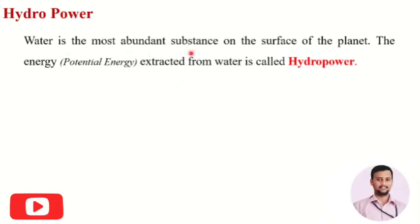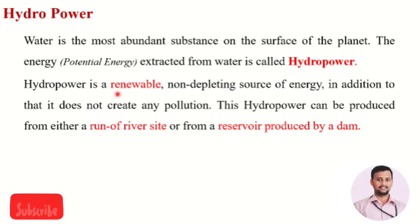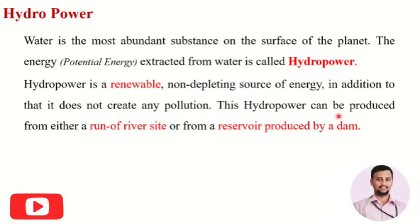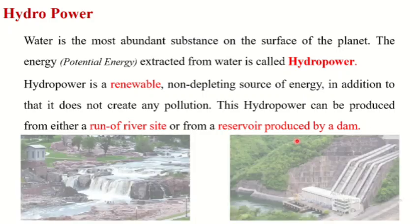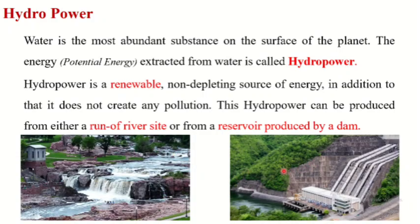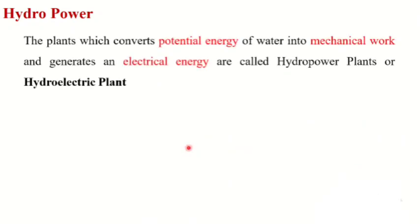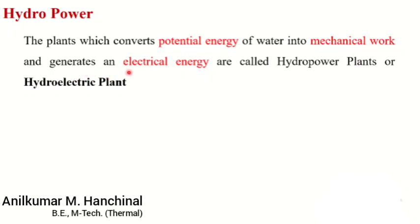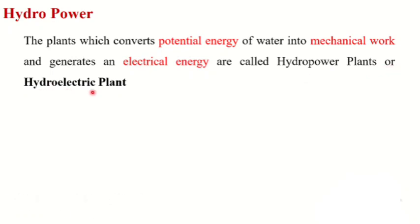As we all know, water is the most abundant substance on the surface of a planet. The energy — that is, potential energy — extracted from water is called hydropower. Hydropower is a renewable, non-depleting source of energy, and it does not create any pollution. Hydropower can be produced from either a run-of-river source or from a reservoir produced by a dam. The plants which convert the potential energy of water into mechanical work and generate electrical energy are called hydropower plants or hydroelectric plants.